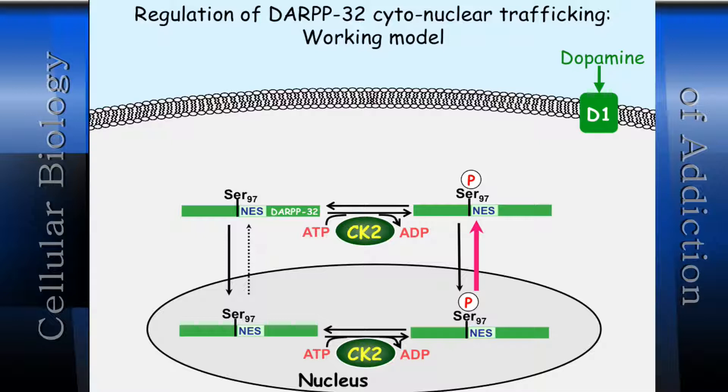At baseline you see it in the cytosol, but it's actually going in and being pumped out as fast as it can. It's part of a loop where CK2 — which is enriched in the nucleus — phosphorylates any DARPP that gets into the nucleus, and it gets pumped back out.